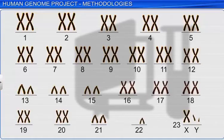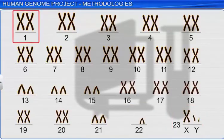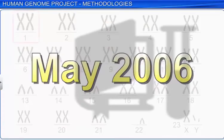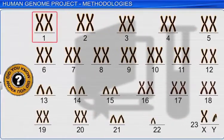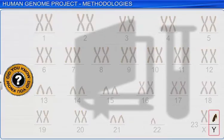Out of the 22 autosomes and 2 allosomes, X and Y, chromosome 1 was the last to be sequenced, in May 2006. Did you know that chromosome 1 has the most number of genes — 2968 — whereas chromosome Y has the least number of genes, only 231?